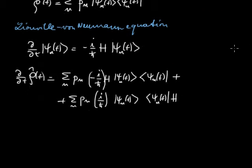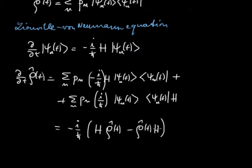So if we put everything together, we will get that we have an equation on the right-hand side of the following form: minus i divided by h-bar, and here we have H multiplied by rho minus rho multiplied by H from the right-hand side, which we also often write in terms of a commutator.